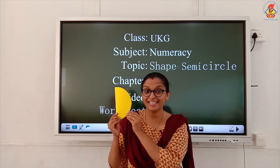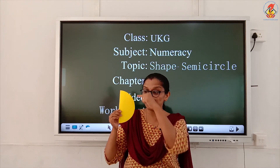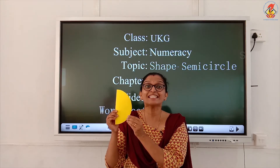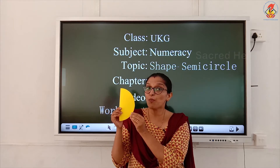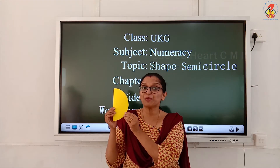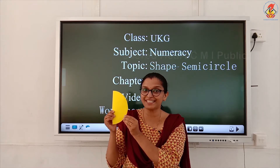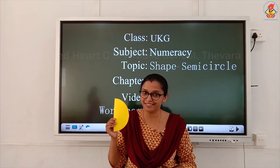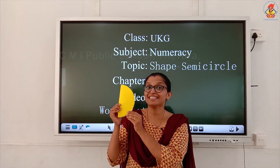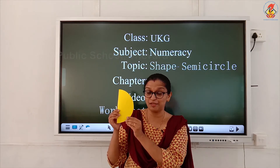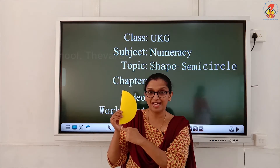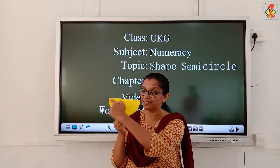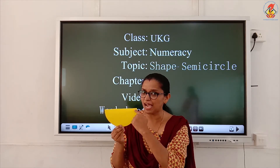Now what do you see? Yes, we see a curve and a line. This shape is called semicircle. Semicircle — repeat again — semicircle. Semi means half, and semicircle means half a circle. So what shape is this, children? This is a semicircle.